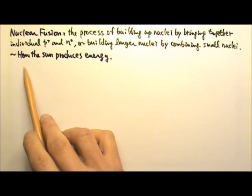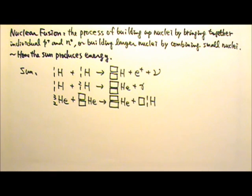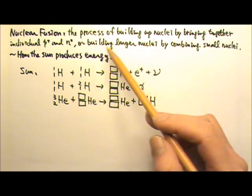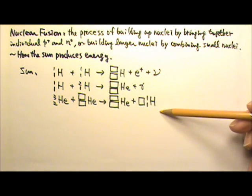Nuclear fusion is how our Sun and other stars produce energy. Let's look at an example. This is one of the sequences of fusion reactions that our Sun uses to produce energy. See if you can balance these equations.